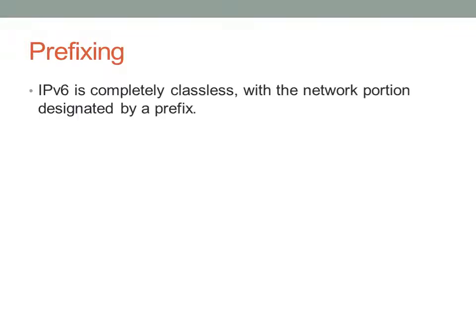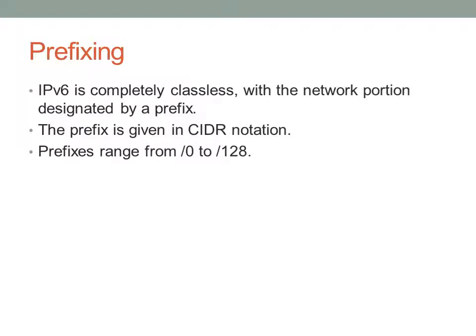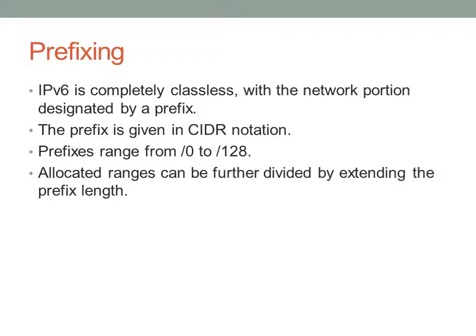Now we have what's called prefixing, which ties into the concept of subnetting from IPv4. IPv6 is completely classless. The network portion is designated only by a prefix, and that prefix length is given in CIDR notation — doing away with dotted-decimal subnet masks, which saves a lot of time. Prefixes range from 0 to 128, which makes sense since there are 128 bits. Allocated ranges can be further divided by extending the prefix length, much like you'd extend a subnet mask to further subnet an existing IPv4 network.